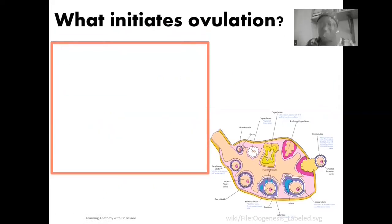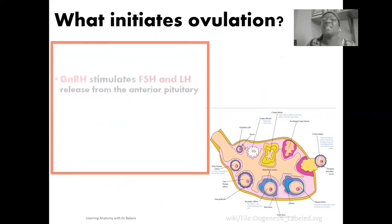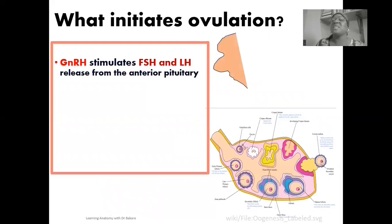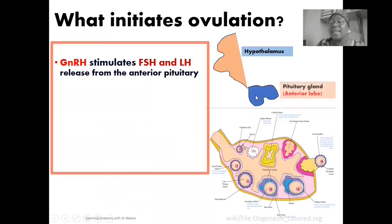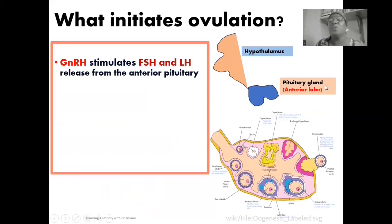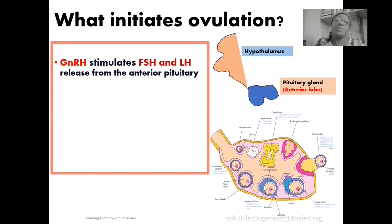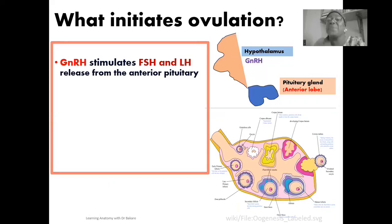The process of ovulation is initiated by the hypothalamus, one of the structural components of the diencephalon. The hypothalamus produces gonadotropin-releasing hormone (GnRH), which stimulates the release of gonadotropins. This hormone is released into the bloodstream, as the hypothalamus is an endocrine gland, and it targets the anterior lobe of the pituitary gland. The pituitary gland then initiates the production of gonadotropins — follicle-stimulating hormone (FSH) and luteinizing hormone (LH) — also released directly into the bloodstream.